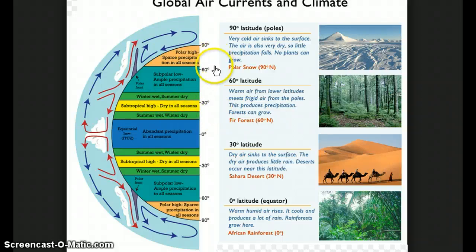As you continue to move further north to 60 degrees north latitude and 60 degrees south latitude, this is another area where the air once again rises. Where air rises, evaporation can form clouds. When evaporation forms clouds, we get precipitation. At 60 degrees latitude, this is where a lot of our temperate and deciduous forests form.